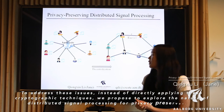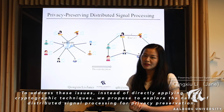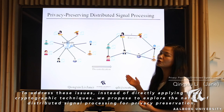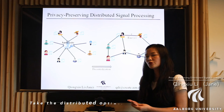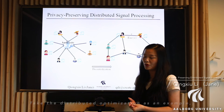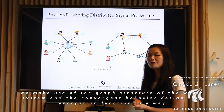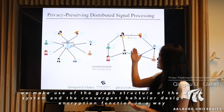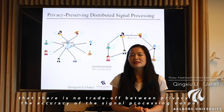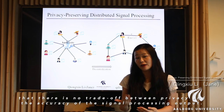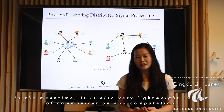To address these issues, instead of directly applying this cryptographic technique, we propose to explore the nature of distributed signal processing for privacy preservation. Take the distributed optimization as an example. We make use of the graph structure of the whole system and the convergent behavior to design this encryption function in a way that there is no trade-off between privacy and the accuracy of the signal processing output. In the meantime, it is also very lightweight in terms of communication and computation.